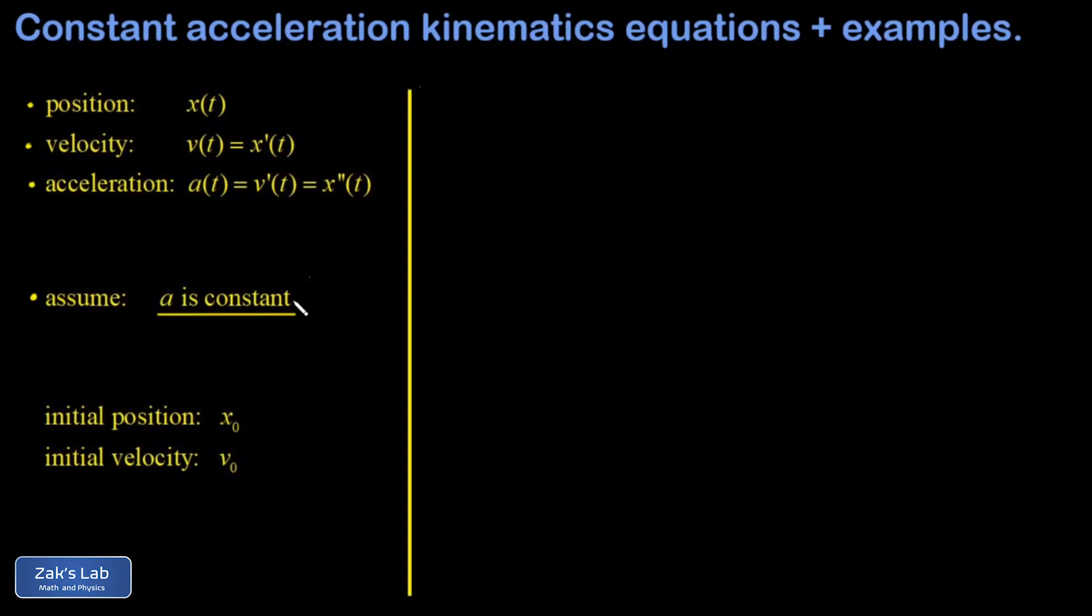If you run into a case where acceleration is not constant, all bets are off and you have to go back to the fundamentals and look at derivatives and integrals again. And then the final piece to get ready here is we're going to use the symbol x0 for the initial position and v0 for the initial velocity.